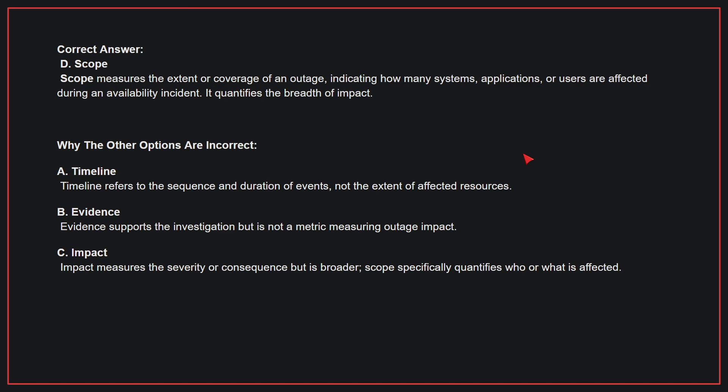Why the other options are incorrect: A — timeline. Timeline refers to the sequence and duration of events, not the extent of affected resources. B — evidence. Evidence supports the investigation but is not a metric measuring outage impact. C — impact. Impact measures the severity or consequence but is broader; scope specifically quantifies who or what is affected. Therefore, the correct answer is D.